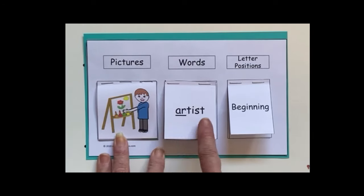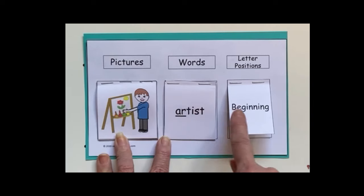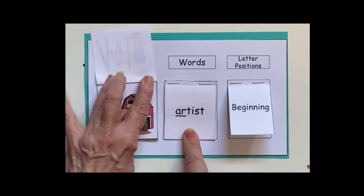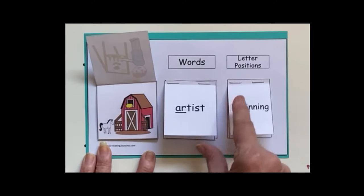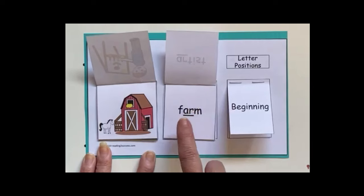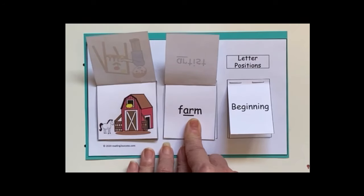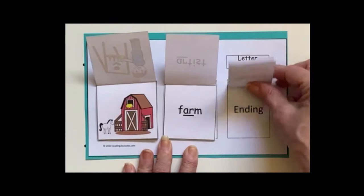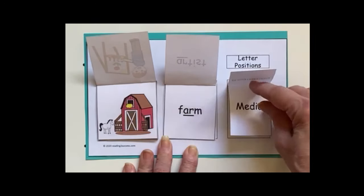Let's look at our first example: we have an artist. This word says 'artist' and the A-R R-Controlled Vowel is found at the beginning of the word. Let's look at one more: this is a farm. Have kids say it slowly. This is 'farm' — have them say the word slowly and ask where do you hear the R sound? Is it at the beginning? No. Is it at the ending? No. It is in the middle — the medial placement of the word.